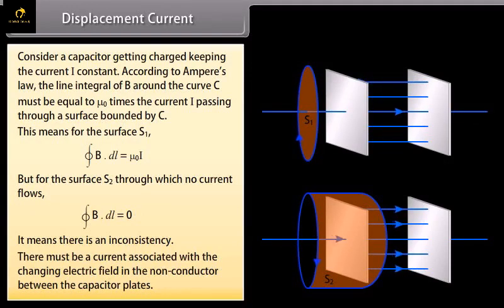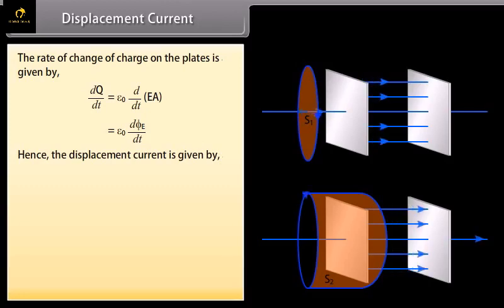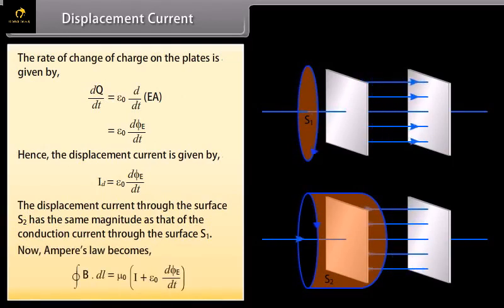There must be a current associated with the changing electric field in the non-conductor between the capacitor plates. The rate of change of charge of the plates is given by epsilon naught D upon DT of EA, which is equal to epsilon naught D phi E by DT. Hence, the displacement current is given by Id is equal to epsilon naught D phi E by DT. Now, Ampere's law becomes close integral of B dot DL is equal to mu naught multiplied by I plus epsilon naught D phi E by DT.